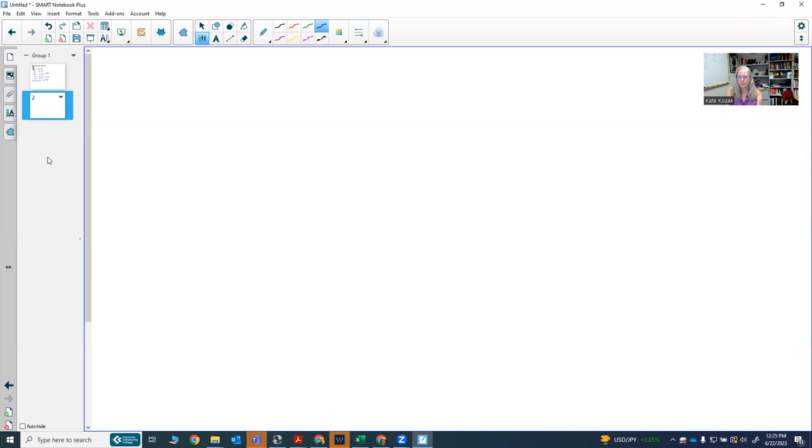So a composite number that I can think of is 24 because 24 can be written as 24 times 1, 12 times 2, 8 times 3, and 6 times 4. So that is a composite number.